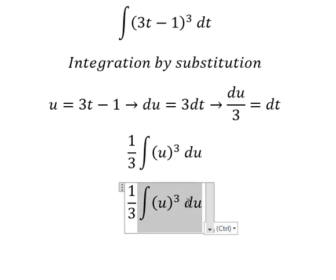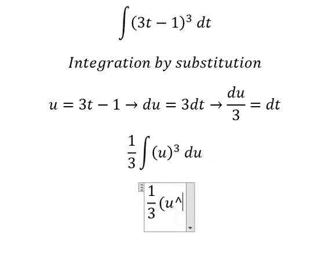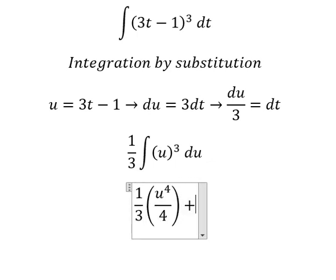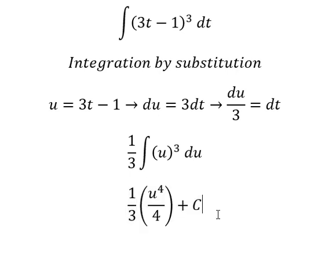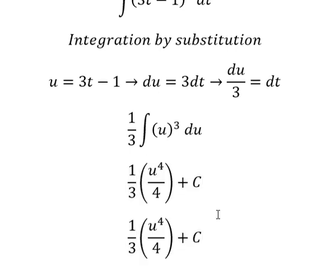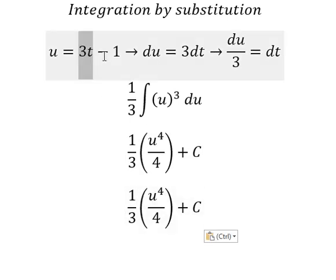About this integration, we have u to the power of 4 over 4. And we put c. About u, that's 3t minus 1.